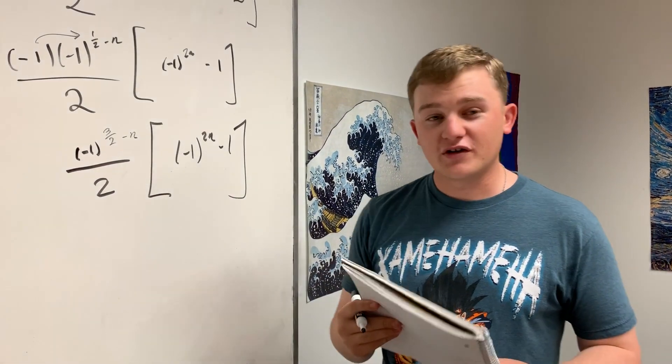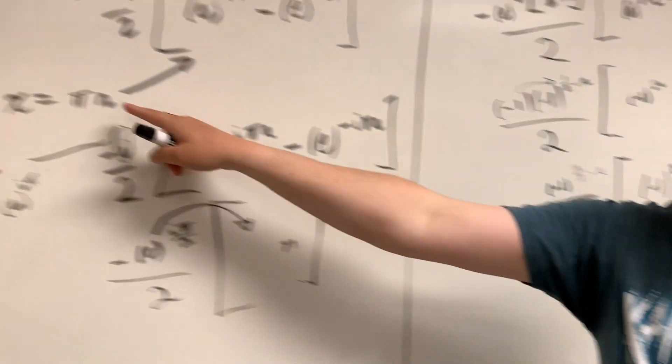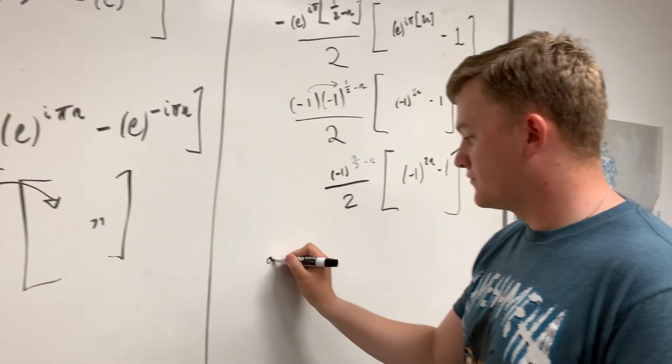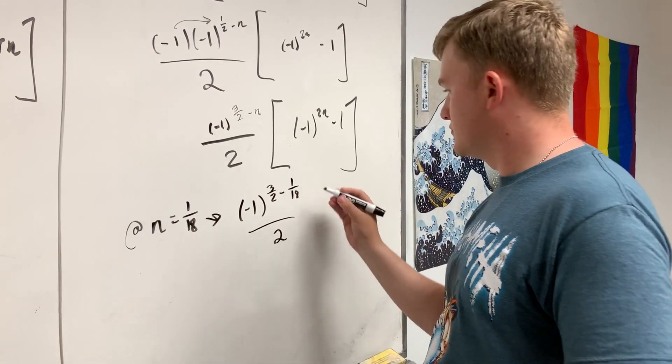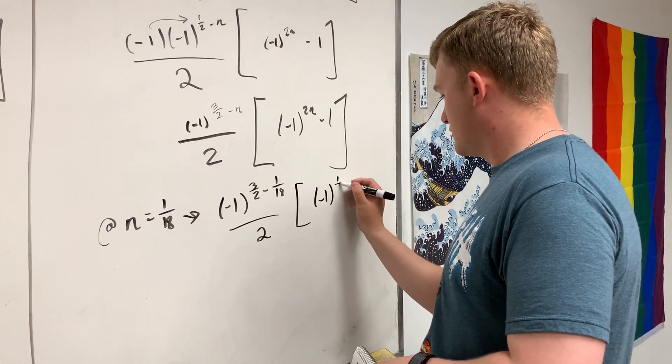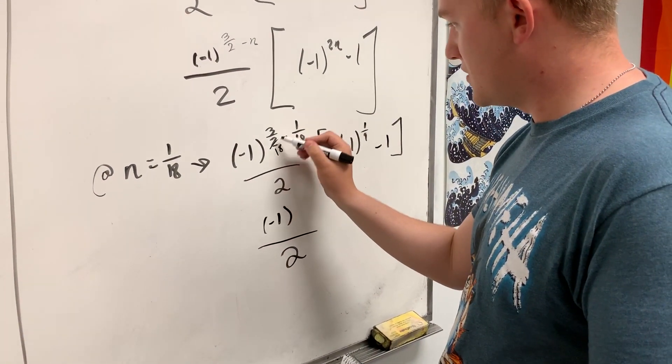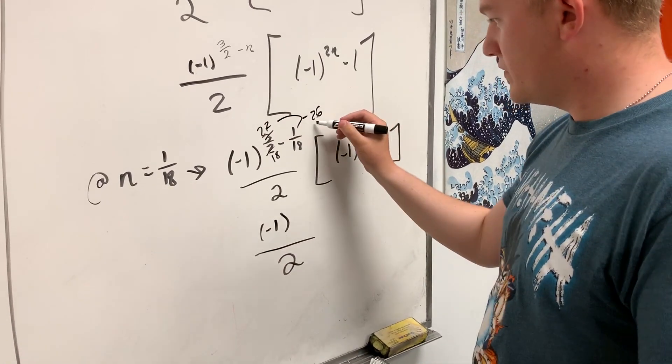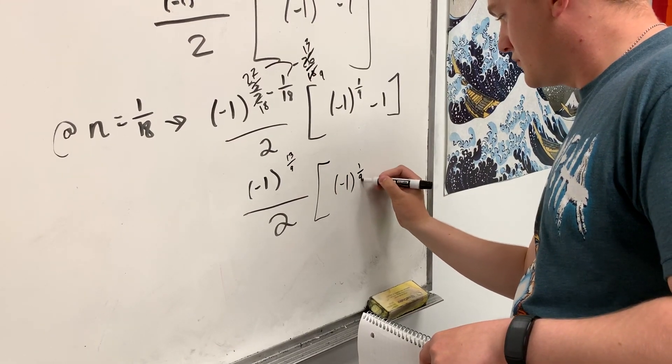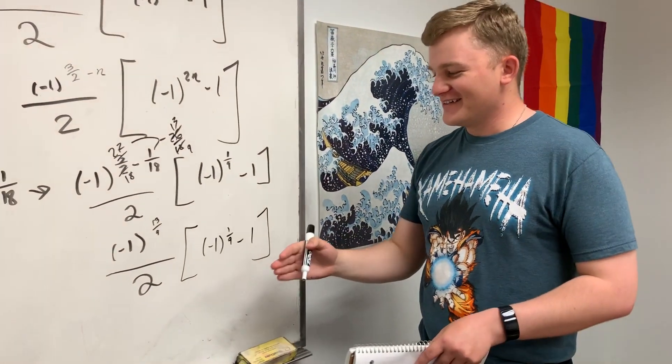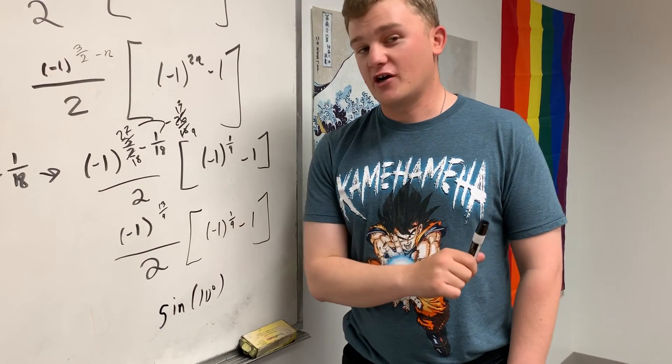And what Blackpenredpen and I have been working on is sine of 10 degrees. He proved it was irrational and I'm going to show you what it looks like in this complex world. So the N value for this, remember that we're going to define this as pi N. So right now the N is 1/18th. So at N equals 1/18th, we get 3 halves minus 1/18th over 2. And over here, negative 1, plug those in, you get 1/9 minus 1. And if you do all the math nice and neat onto this, so this becomes 18, 27 minus 1, it's 26. So we have 26 over 18, simplify that, get 13 over 9. And ta-da! Oh my god, what is this? A sine of 10 degrees. We now have a complex solution for it.